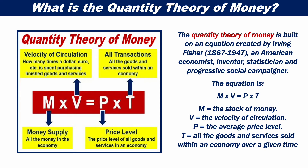The equation is: the stock of money times the velocity of circulation equals the average price level by all the goods and services sold within an economy over a given time.